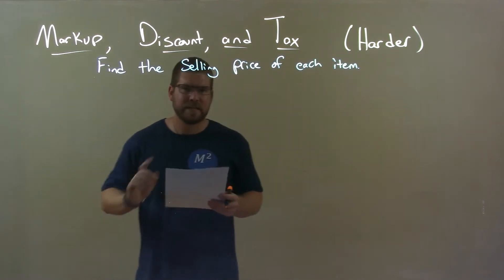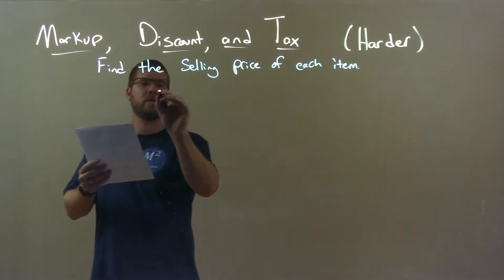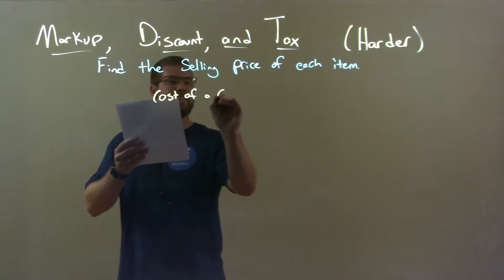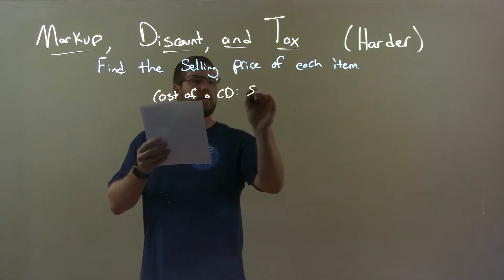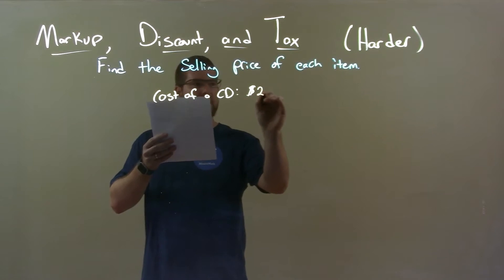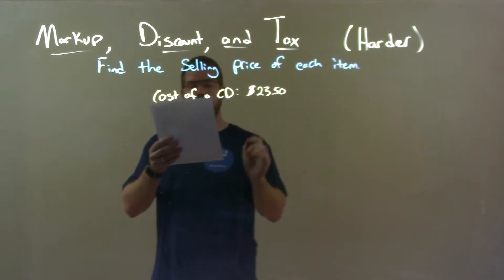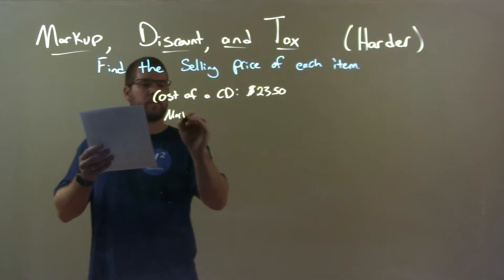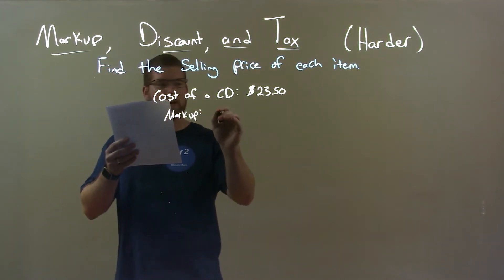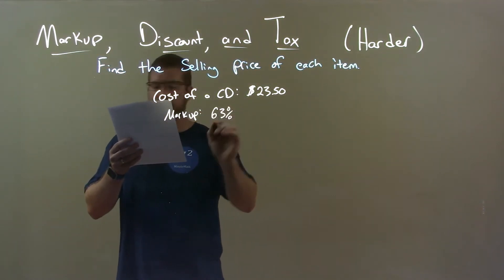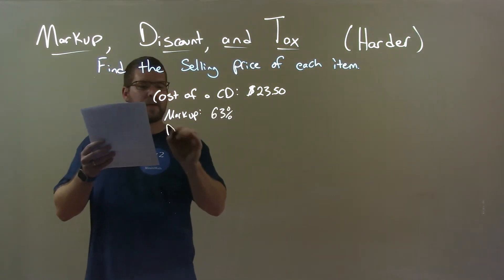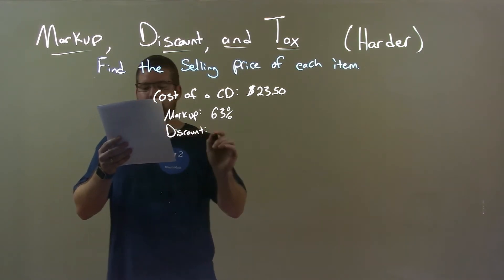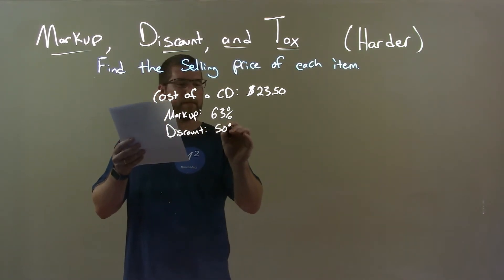So, if I was given this item: the cost of a CD is $23.50. Its markup is 63%, and its discount is 50%.